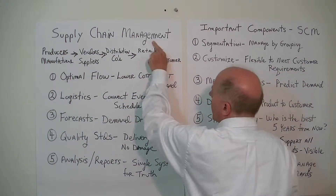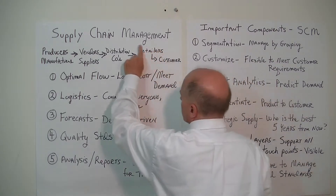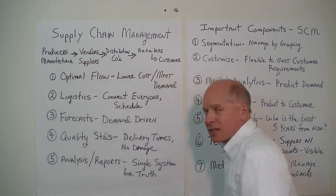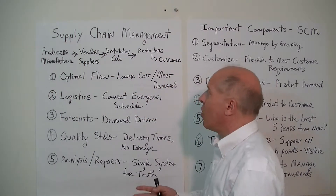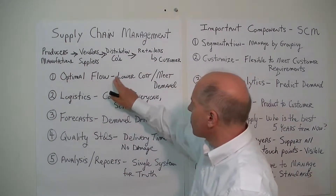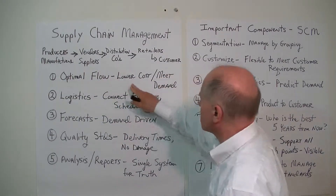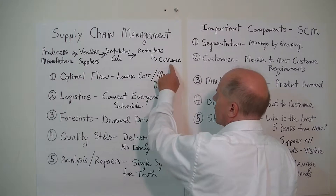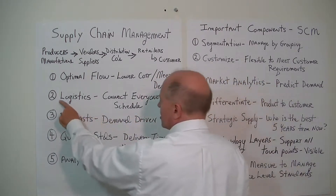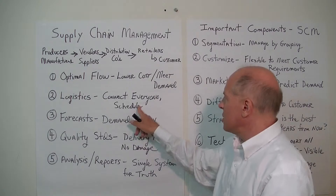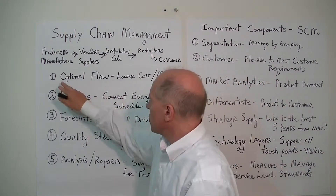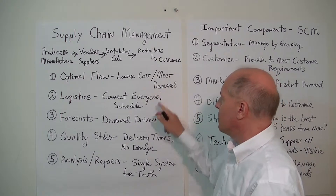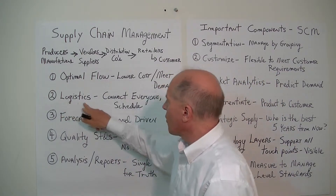The customer may even return a product to the retailer, who returns it upstream, so the chain can get triggered from the customer as well. We're trying to get an optimal flow of this movement so we can control cost and meet demand according to how the customer wants it. There's a lot of logistics involved in scheduling and connecting everyone — optimizing the flow, lowering cost, and meeting demand. It has to be demand-driven.